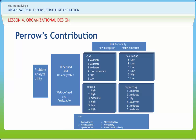Task variability considers the number of exceptions encountered in doing the task within a job. Problem analyzability examines the type of search procedures followed to find ways to respond to task exceptions. Four structural elements include: the amount of discretion an individual can exercise to complete a task, the power of groups to control the unit's goals and strategies, the extent to which organizational units coordinate work using either feedback or planning, and the level of interdependence among groups.